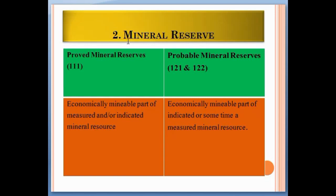The second additional classification is mineral reserves. Mineral reserves have proved mineral reserves with code 111 and probable mineral reserves with codes 121 and 122. Proved mineral reserves represent the economically mineable part of the measured and indicated mineral resources. In mineral reserves, proved mineral reserves is the highest category with code 111.